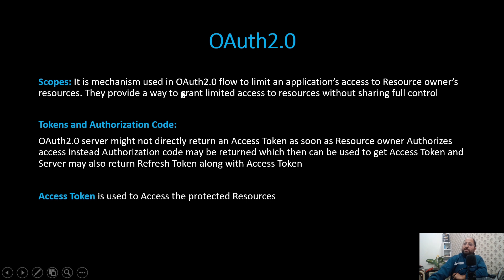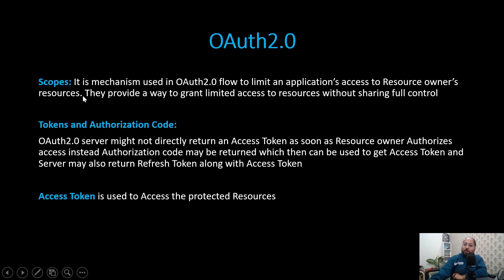Whenever the client makes a request to the authorization server, it will be sending the scope — that it needs read access to a particular module. So this is how we can control the limited access with the help of scopes. The next thing is tokens and authorization code.